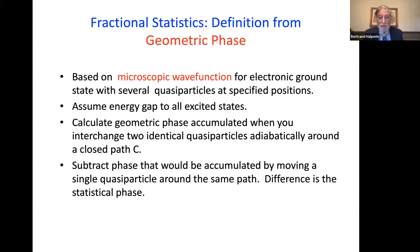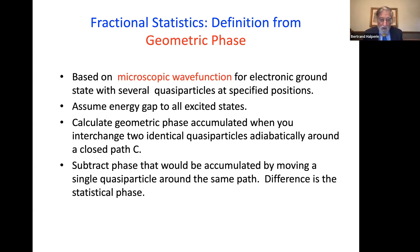There's another way of thinking about it in terms of a geometric phase, based not on the effective wave function but on the microscopic wave function for the electronic ground state — taking into account all the electrons, with several quasi-particles at fixed positions. Assuming there's an energy gap to all states, you can calculate the geometric phase accumulated when you interchange two identical quasi-particles by moving them around a closed path, subtract the phase that would have been there with only a single quasi-particle, and the difference is the statistical phase. It turns out to be exactly the same as you would have gotten from the other definition.